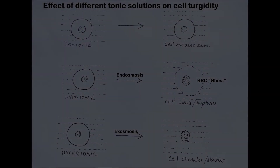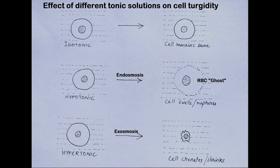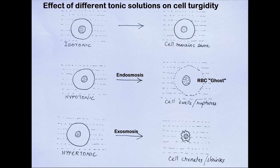When cells are placed in an isotonic solution, they remain the same as there is no net movement of solvent into or out of the cells. However, when cells are placed in a solution which is hypotonic to them, the cells will begin to swell as there is net movement of solvent into the cells. This process is known as endosmosis.